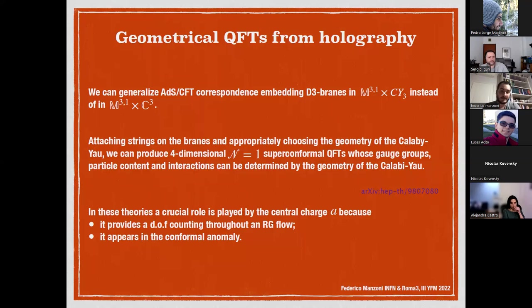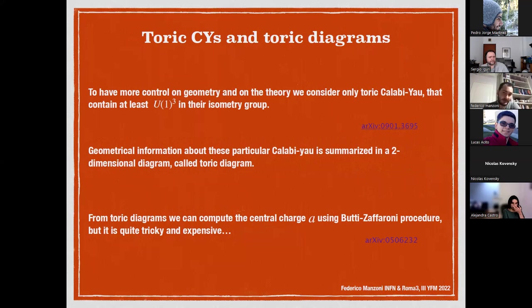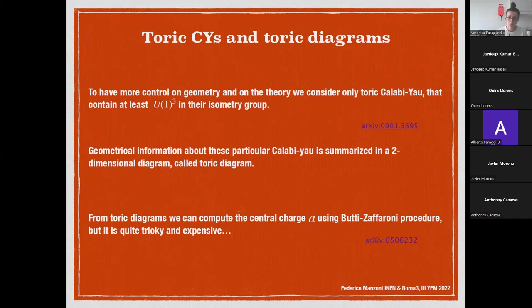In this construction, there is a crucial parameter—the central charge—that plays a crucial role essentially because it provides the degrees of freedom counting throughout the energy flow, and it appears and therefore controls the conformal anomaly. However, to have more control on the geometry and on the theory, we consider only a specific subclass of Calabi-Yau: the toric Calabi-Yau. A Calabi-Yau is toric if its isometry group contains at least U(1)^3. All the geometrical information about this particular class of Calabi-Yau is summarized in a simple object: a two-dimensional diagram that we call the toric diagram.